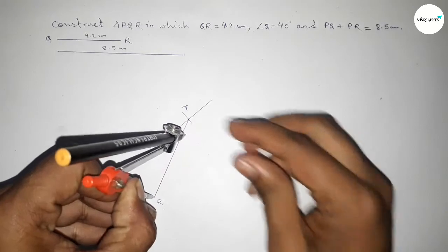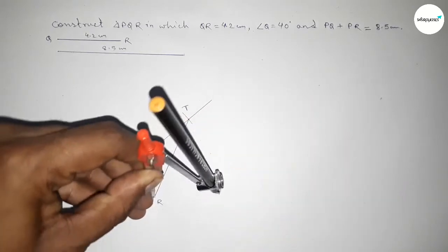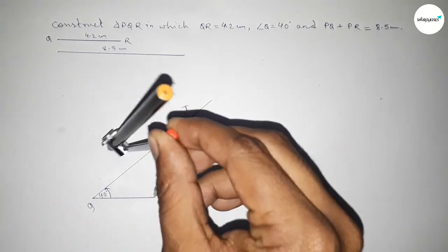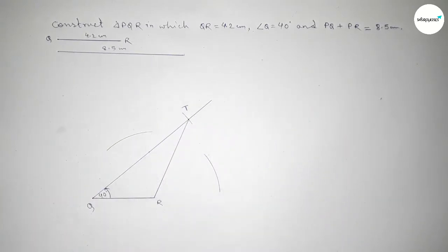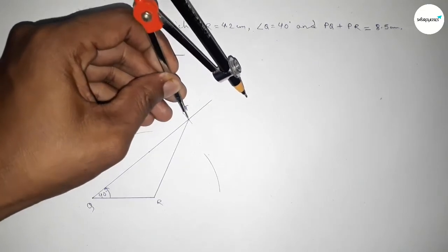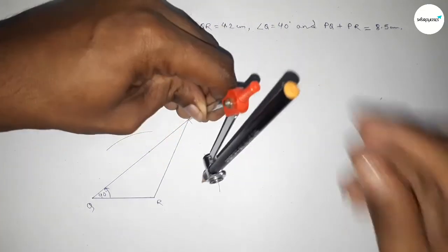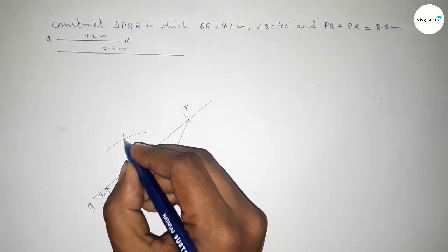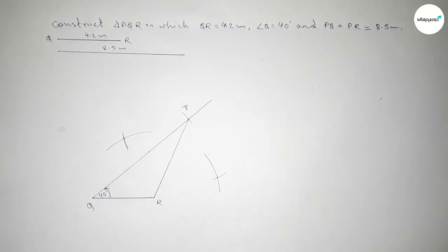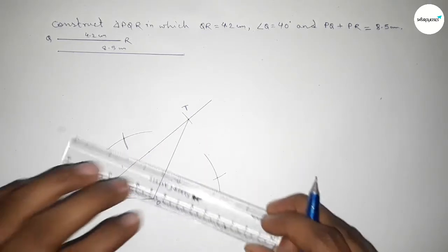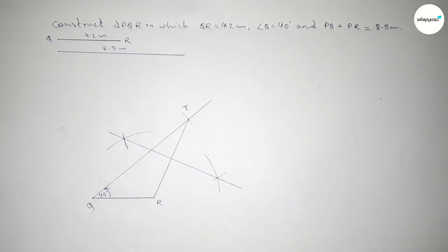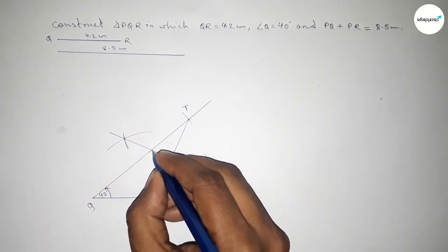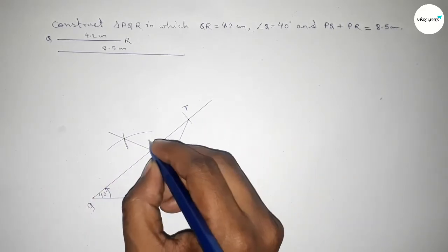Now joining R and T. Next we bisect the line RT by putting the compass on R, taking greater than half of RT, and drawing arcs on both sides. Then putting the compass on T and cutting arcs with the same length. Both curves intersect at two points.